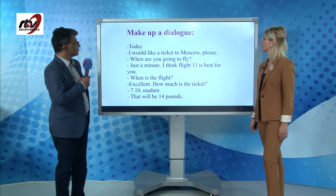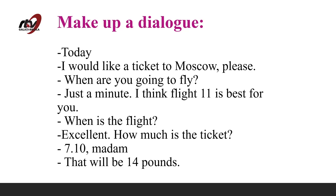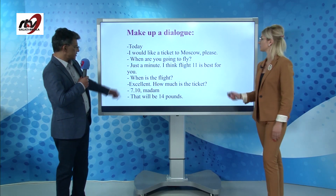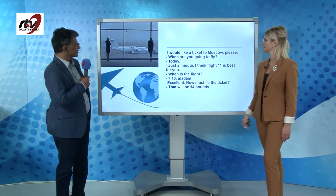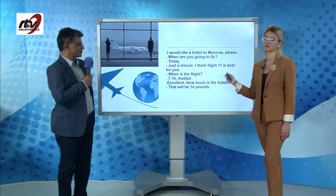For the next activity, put these sentences in order to make a dialogue. Here is the correct version: 'I would like a ticket to Moscow, please.' 'When are you going to fly?' 'Today.' 'Just a minute — I think flight 11 is best for you.' 'When is the flight?' '7:10, ma'am.' 'Excellent. How much is the ticket?' 'That will be 14 pounds.' You have simple functional language here.